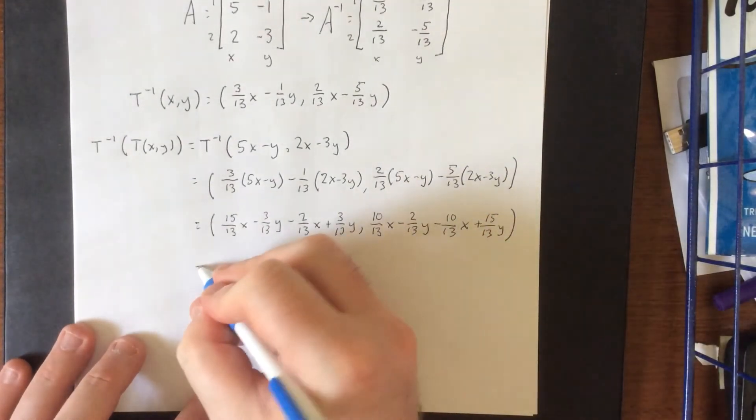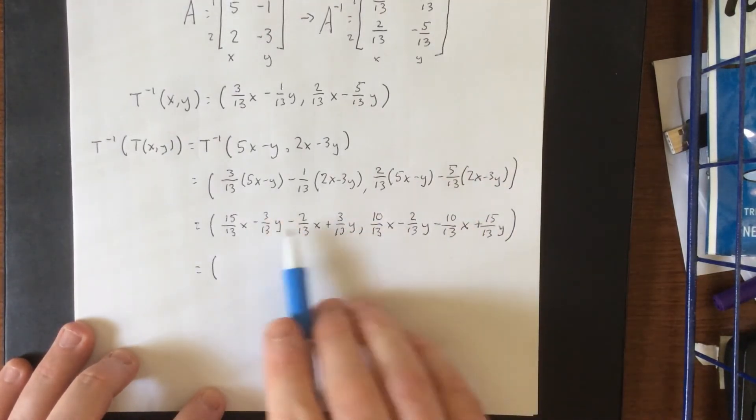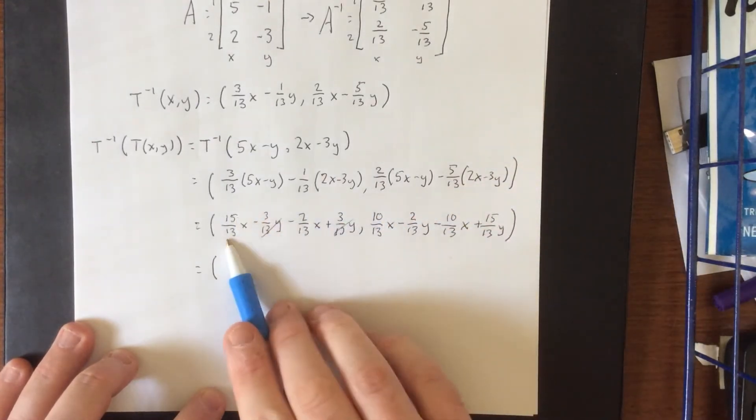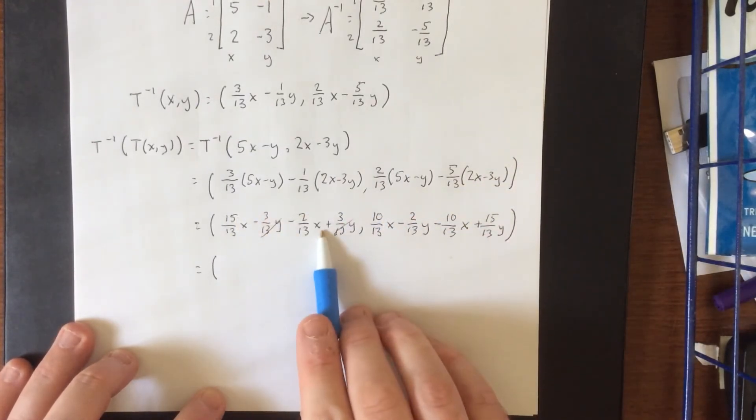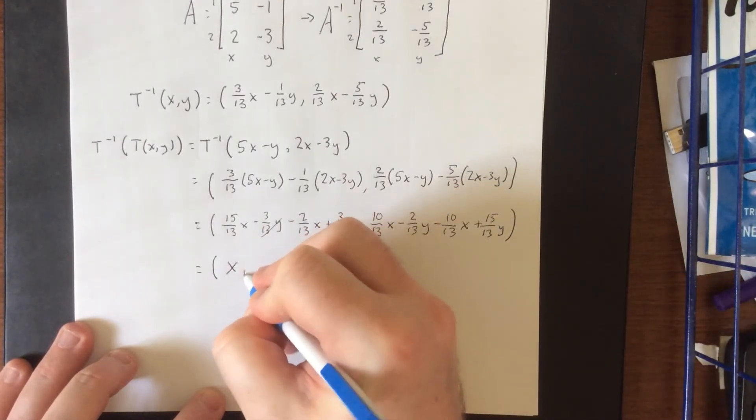To simplify all of this, we have minus 3/13 y plus 3/13 y on the first component, and we're left with 15/13 x minus 2/13 x, which would be 13/13 x, or simply x.